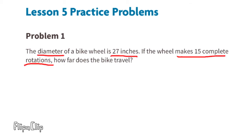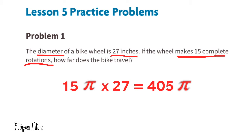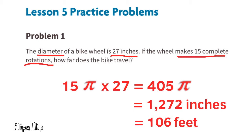Problem number 1. The diameter of a bike wheel is 27 inches. If the wheel makes 15 complete rotations, how far does the bike travel? 15 rotations times pi times 27 inches. 15 times 27 is 405. 405 times pi is 1,272 inches. The bike would have traveled 1,272 inches, which is equal to 106 feet.